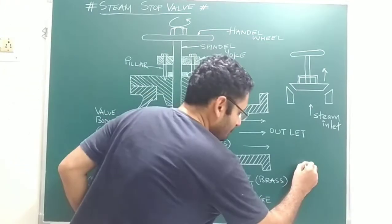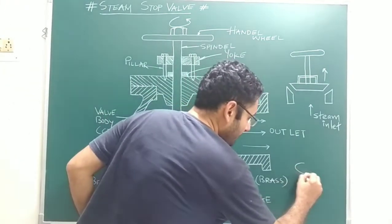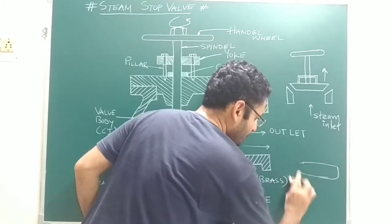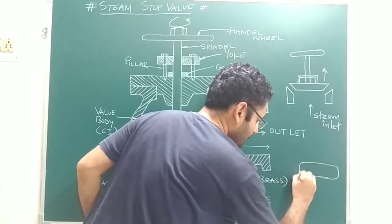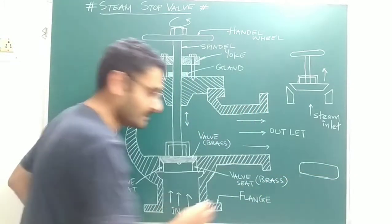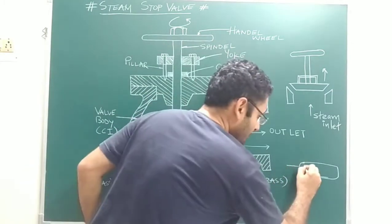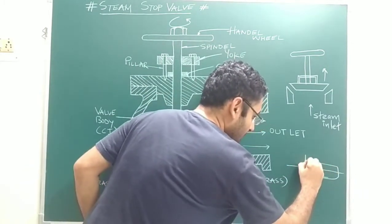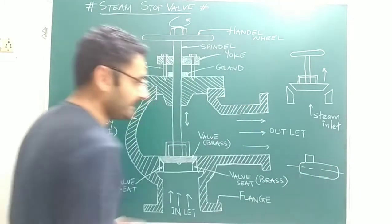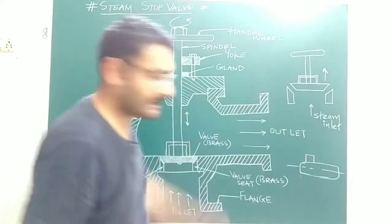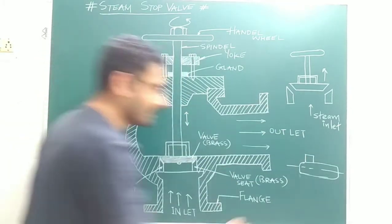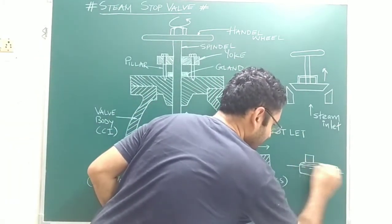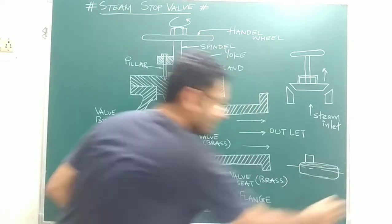For example, if I draw the boiler — that is your horizontal fire tube boiler — the steam stop valve is located at the top side of the boiler, or you can say in the steam portion, because steam is present in that portion. Below the steam, water is present.